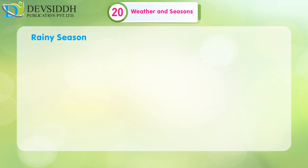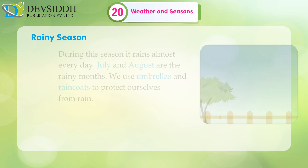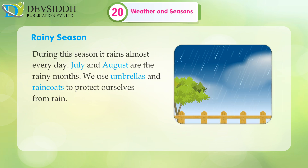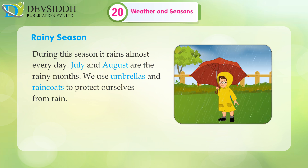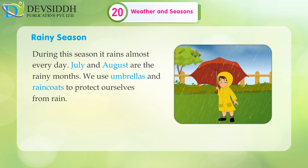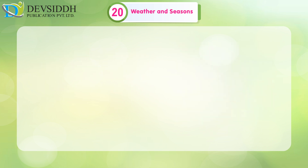Rainy Season. During this season, it rains almost every day. July and August are the rainy months. We use umbrellas and raincoats to protect ourselves from rain.